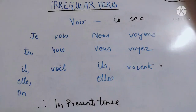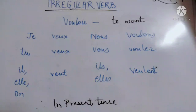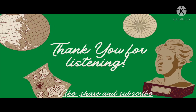The last verb is 'vouloir', which means 'to want'. The stem is V-O-U-L-O. Conjugation: 'je veux' — V-E-U-X, same for 'tu'. 'Il veut' — V-E-U-T. 'Nous voulons' — V-O-U-L-O-N-S. 'Vous voulez' — V-O-U-L-E-Z. 'Ils veulent' — V-E-U-L-E-N-T. Meaning: I want, you want, he wants, we want, you want formally, and they want. That's it — we are done with irregular verbs! If you like the video, please hit like, share, subscribe, and keep watching Learning Language. Stay tuned!